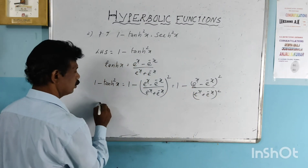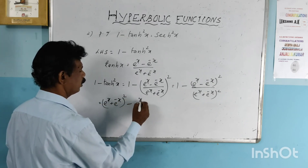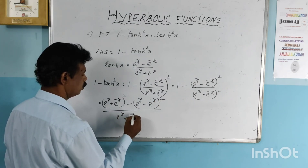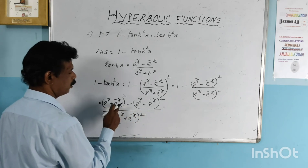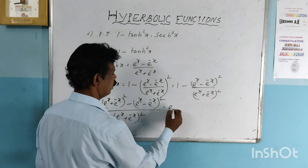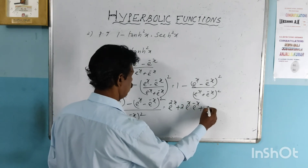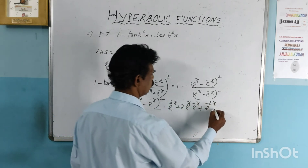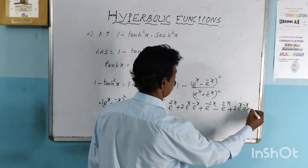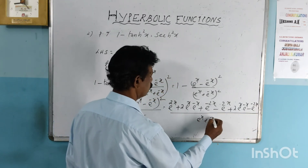Taking a common denominator, the numerator becomes e raised to x plus e raised to minus x all squared minus e raised to x minus e raised to minus x all squared. Expanding using algebraic identities: e raised to 2x plus 2 times e raised to x times e raised to minus x plus e raised to minus 2x, minus e raised to 2x plus 2 times e raised to x times e raised to minus x minus e raised to minus 2x, all divided by e raised to x plus e raised to minus x all squared.